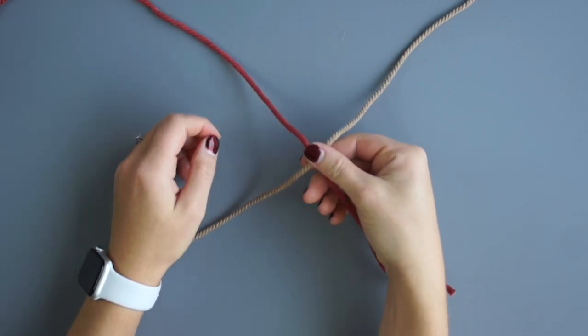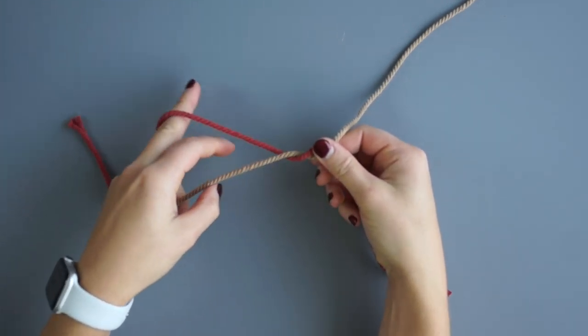Hold the X in your right hand and then wrap the red rope around the cappuccino rope 4 times.